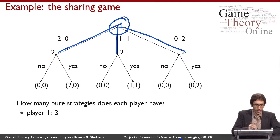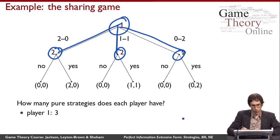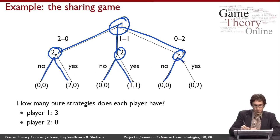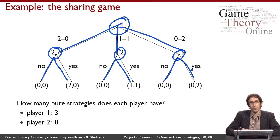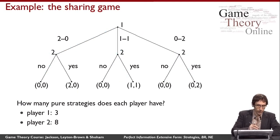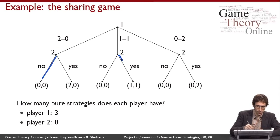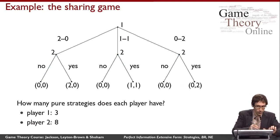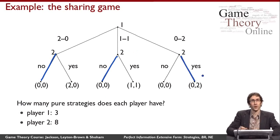Things are a little bit more complicated for player two because player two has three choice nodes. The number of pure strategies for player two is actually eight rather than six. Player two has six different actions, but the reason there are eight pure strategies is that a pure strategy is every combination of choices player two could make in the aggregate. So if player two were to choose decline in one situation, accept in another, and decline in a third, that's one pure strategy — different from other combinations.